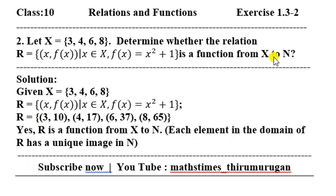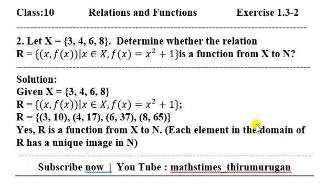The second set is the natural numbers: 1, 2, 3, 4, 5... The ordered pairs are: (3, 10), (4, 17), (6, 37), (8, 65). The domain of R is {1, 2, 3, 4, 6, 8}. The second set is the domain of R.